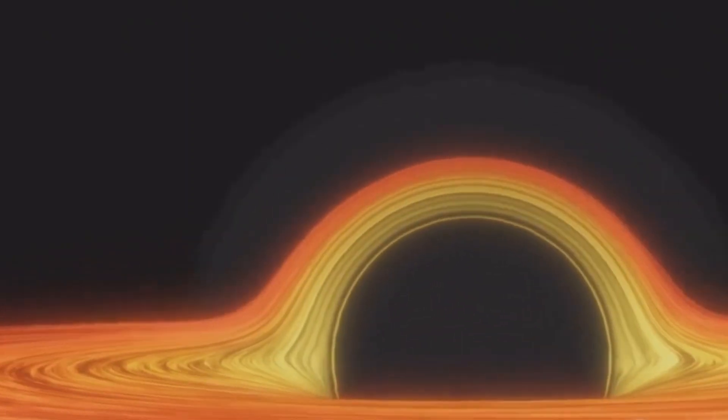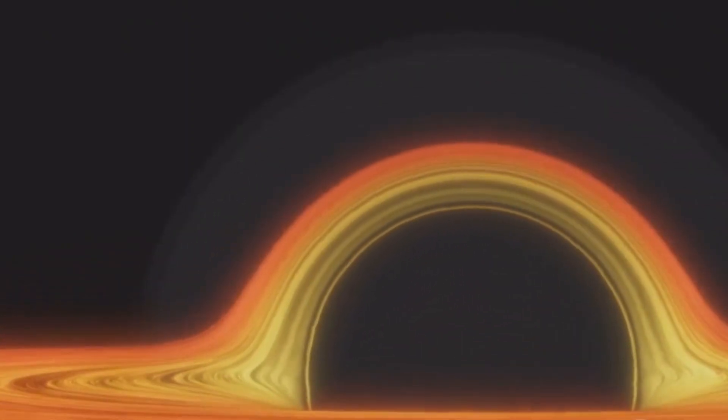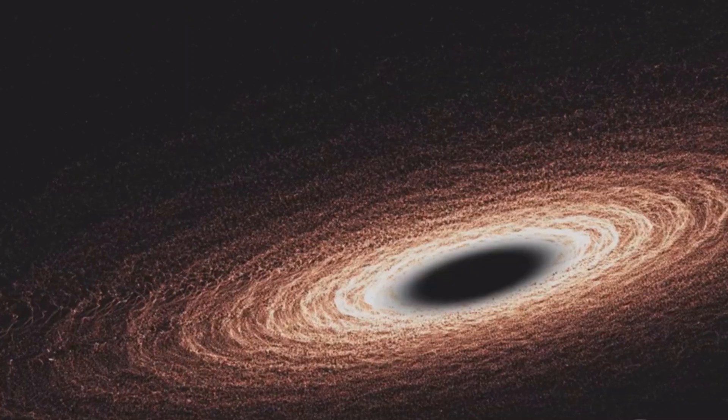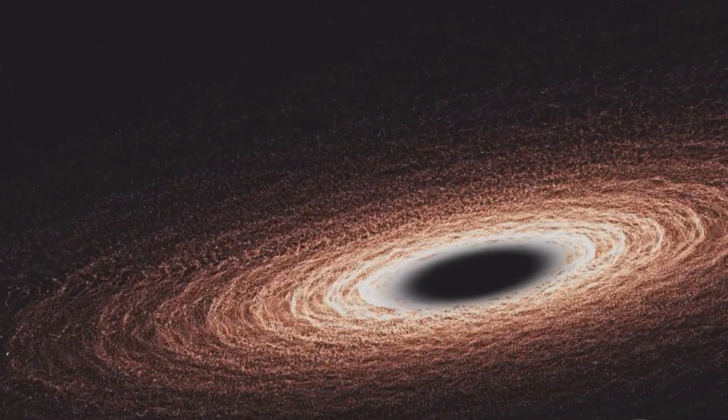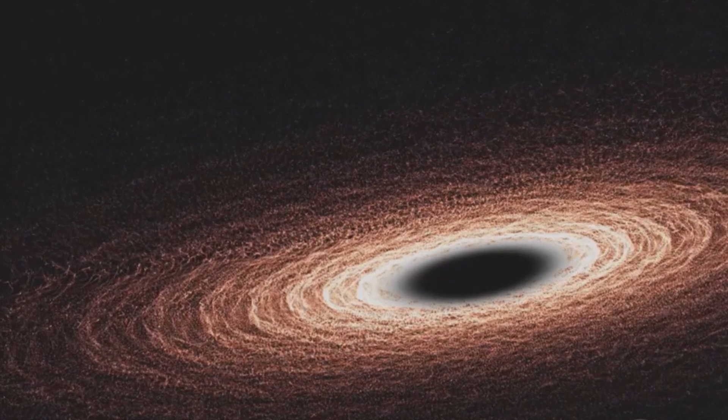Phoenix A's sheer size suggests it couldn't have originated from a star. Typical black holes are born from the collapse of massive stars, but Phoenix A's immense size makes it highly unlikely to have originated from a single stellar collapse.